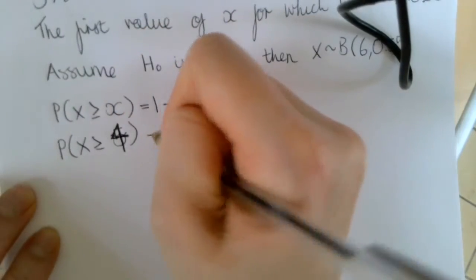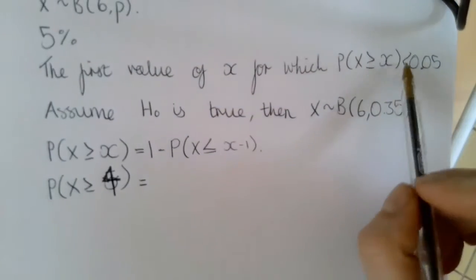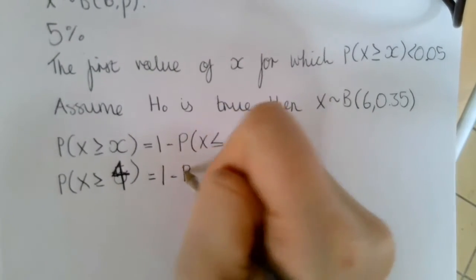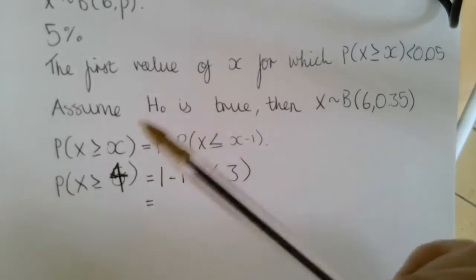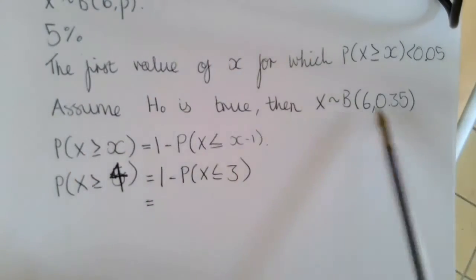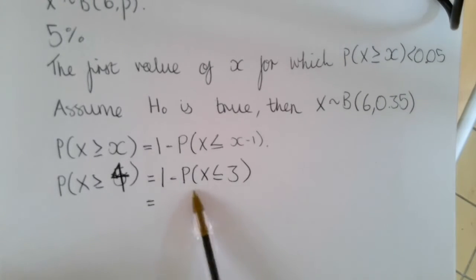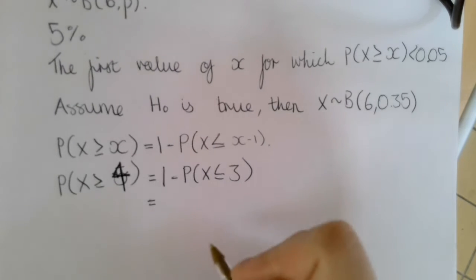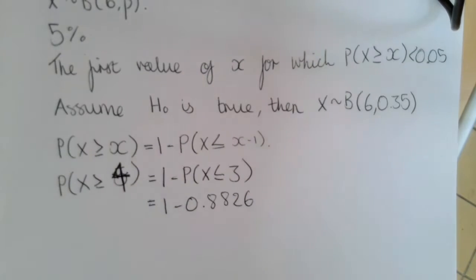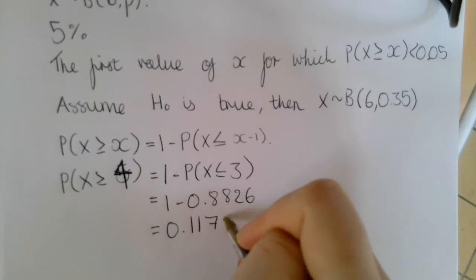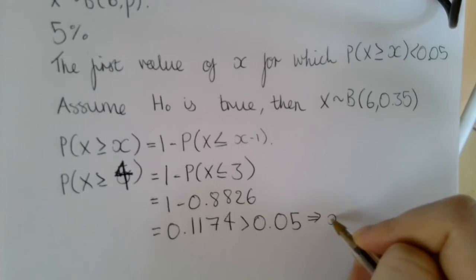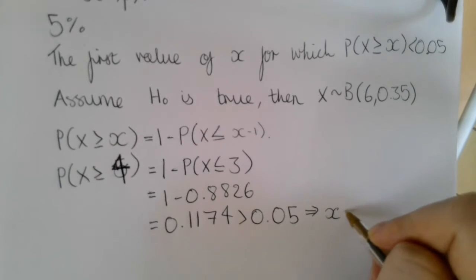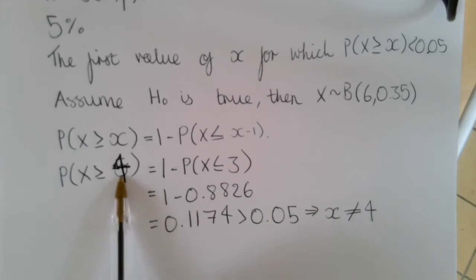I'm going to try x equals 4 first, to see if we get a probability less than 0.05. This is equal to 1 minus the probability that x is less than or equal to 3. Looking at the section for n equals 6 and the column for p equals 0.35, the probability that x is less than or equal to 3 was 0.8826. When we do 1 subtract 0.8826, we get 0.1174. This is greater than 0.05, which means our critical region is not when x is greater than or equal to 4.